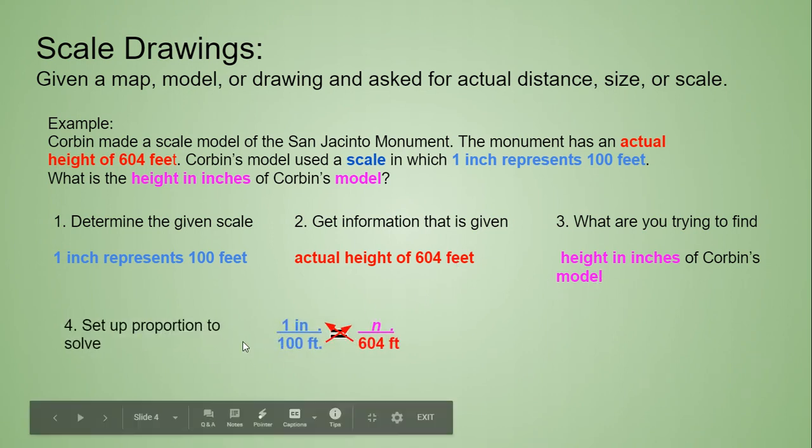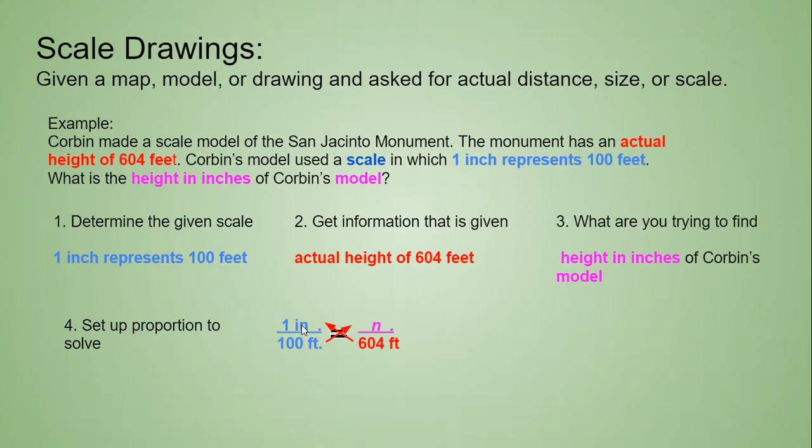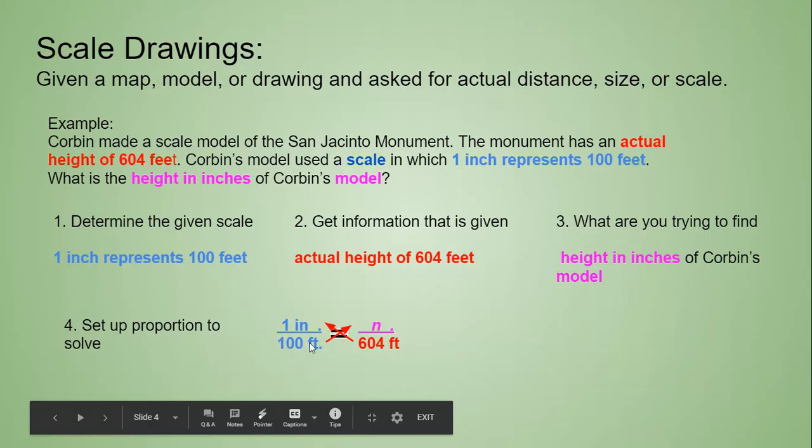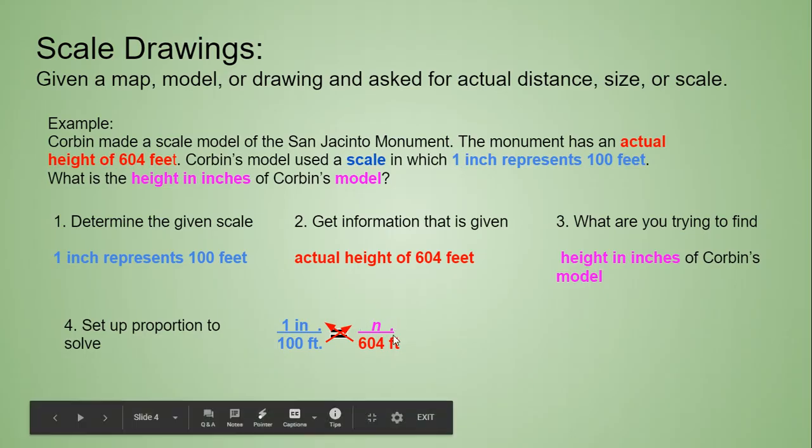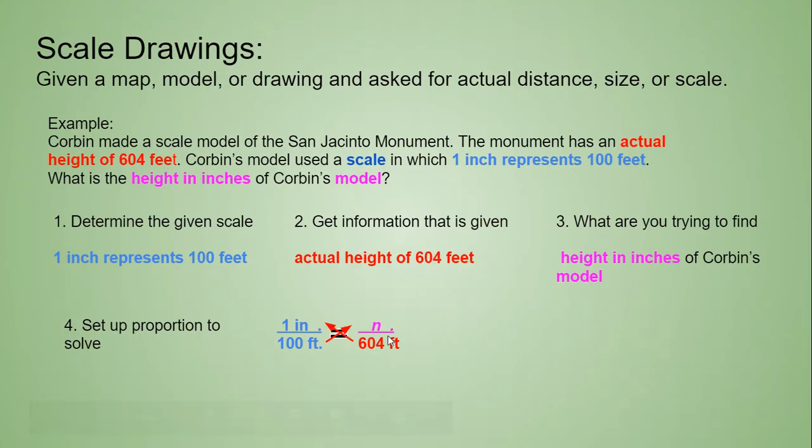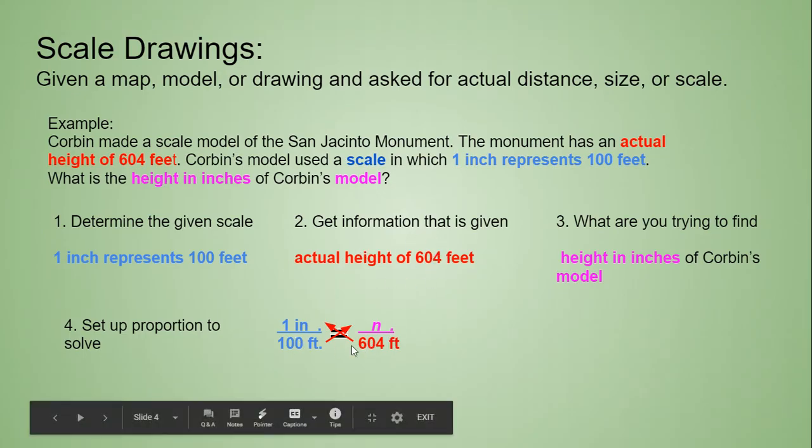So to set up our proportion, we want to start with what our scale is. So we have the 1 inch is represented by 100 feet. And that is equal to what we're looking for. We're looking for the height in inches. So that goes on top with the inches. And we're given the actual height in feet. So that goes on bottom with the 100 feet.